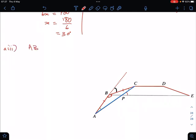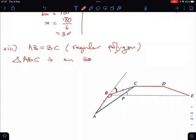So, we know that AB equals BC because it's a regular polygon. From there, we know that triangle ABC is an isosceles triangle. That means your angle ABC is equal to 150 degrees because it's an interior angle of a regular polygon.